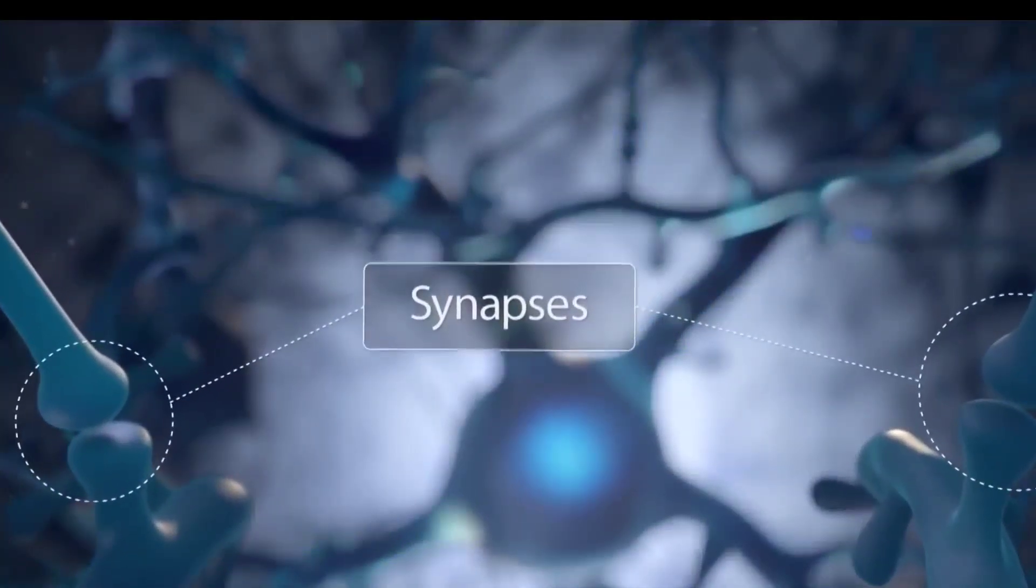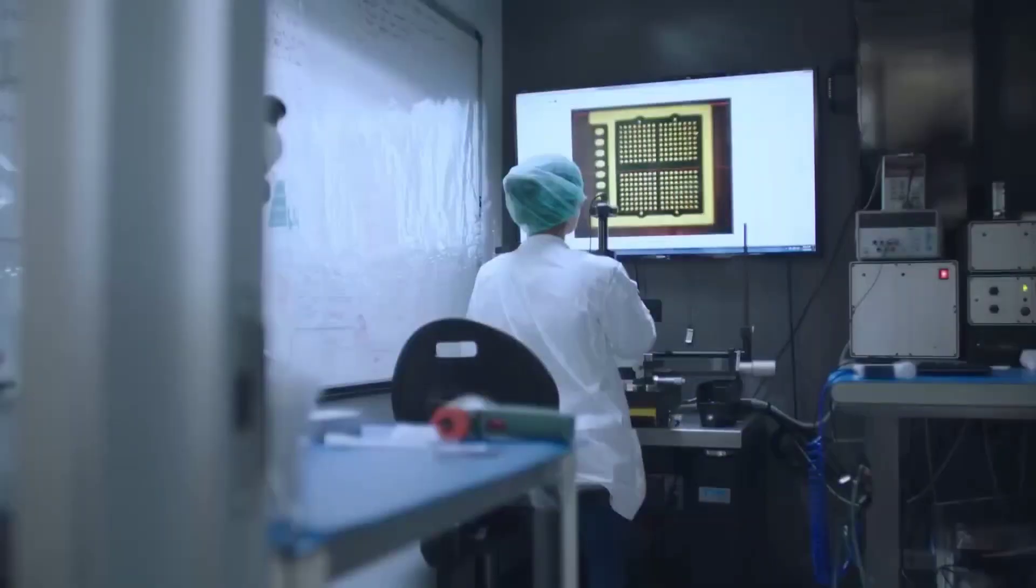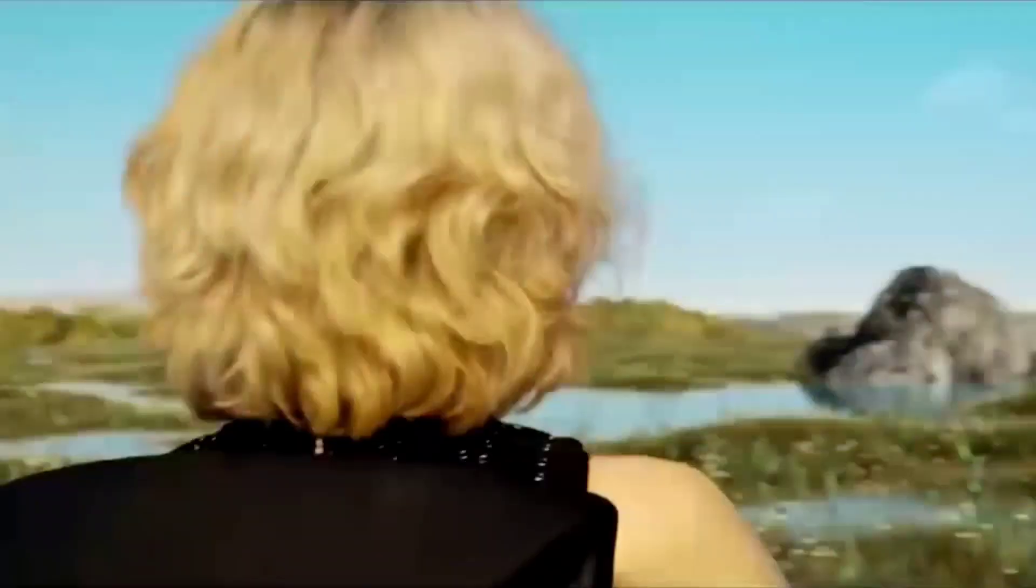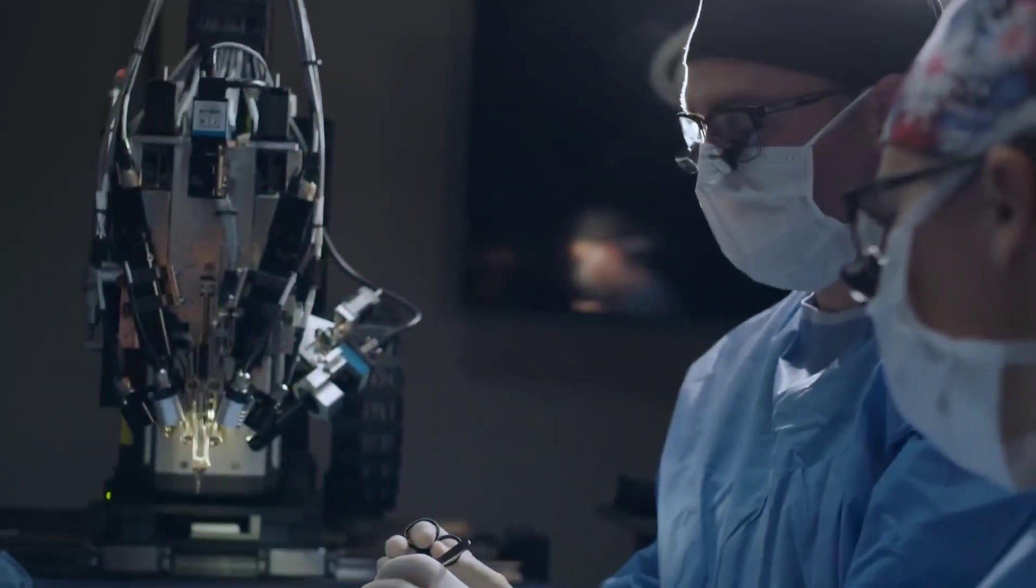Neuralink will implant four of these sensors, three in the motor cortex and one in the somatosensory cortex. It will communicate wirelessly with a device worn behind the ear that will serve as the sole source of data.